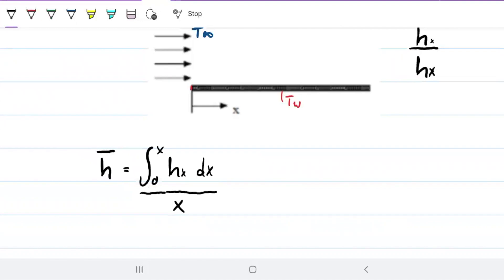So if we take this for the whole plate, if x equals my whole plate, then my average would be from zero to L of this dx over L.